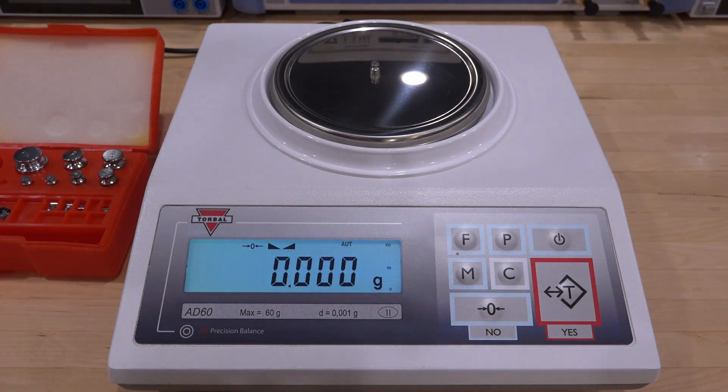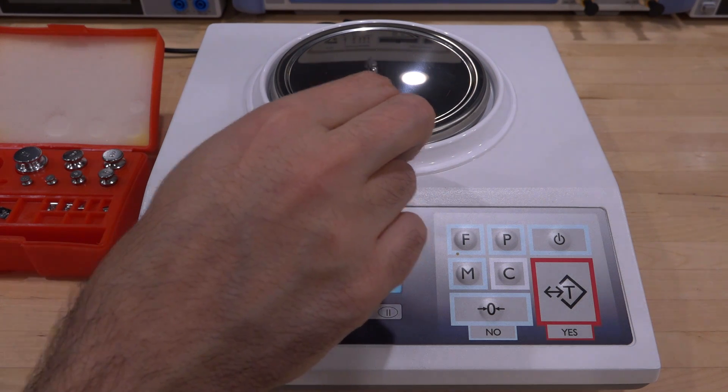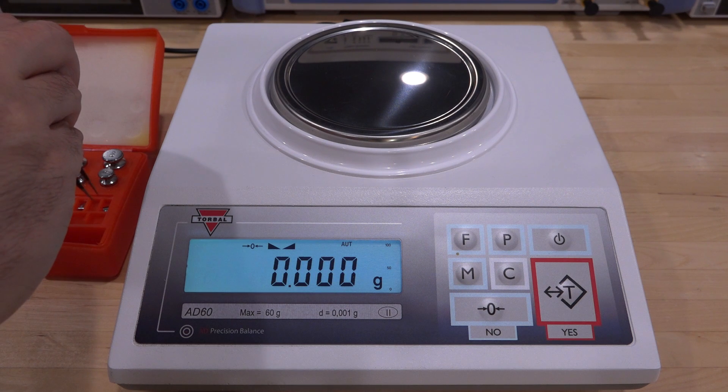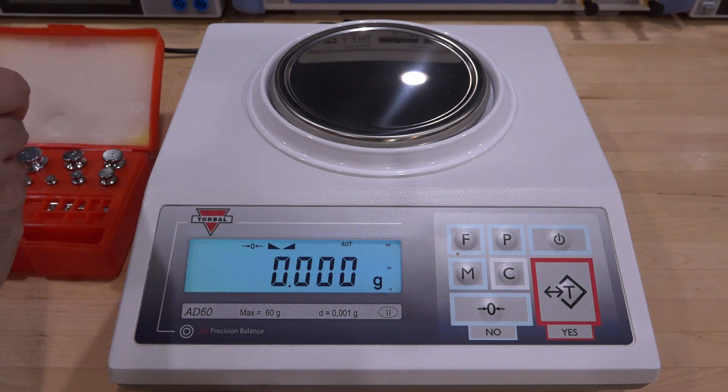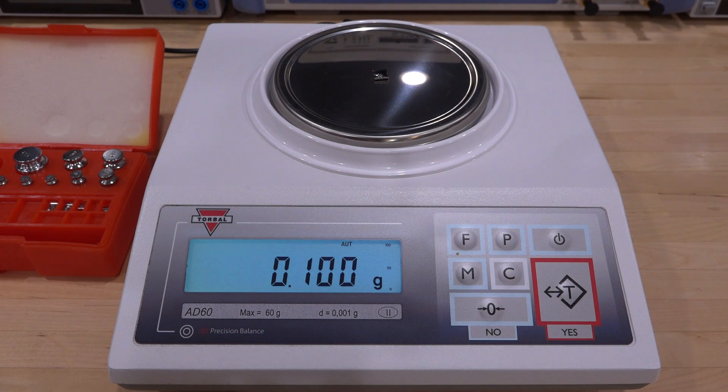Now we can go for something really small. Let's say 0.1 gram. I have to be careful with these because you don't want to touch these. The oil in the hand actually can change the weight of these. Oh perfect, look at that, that is really good.